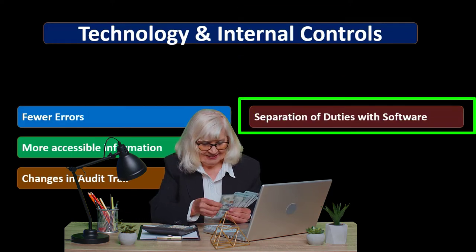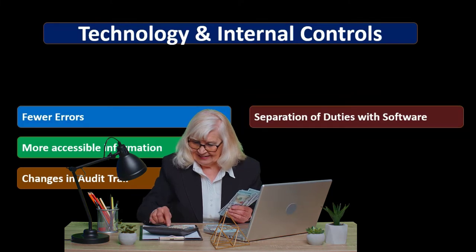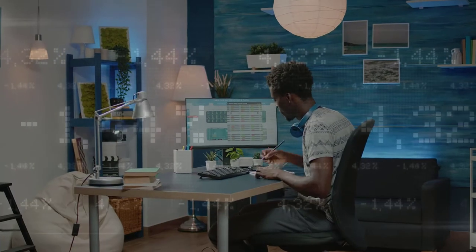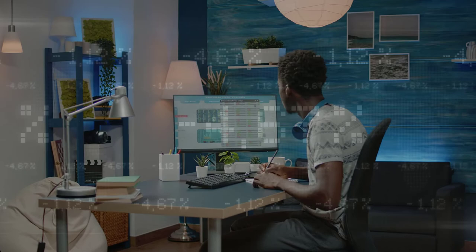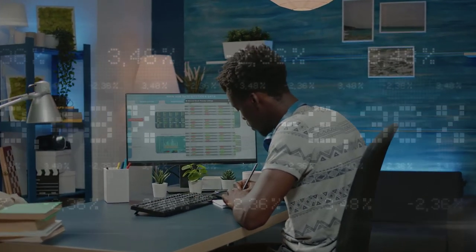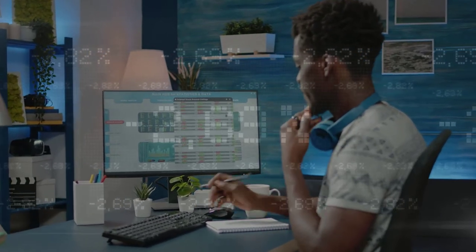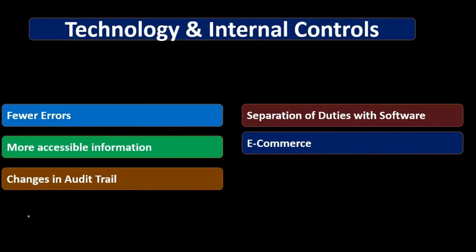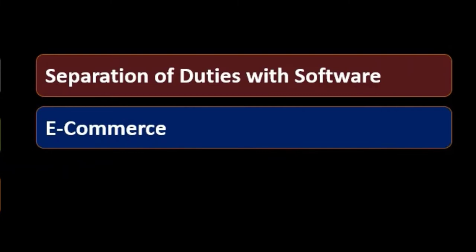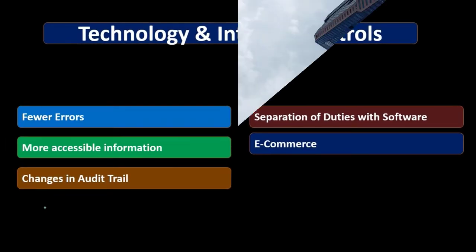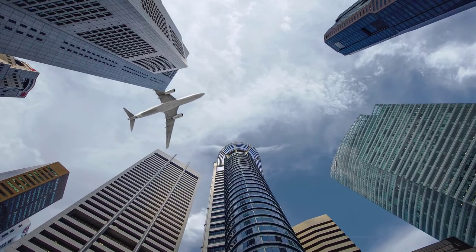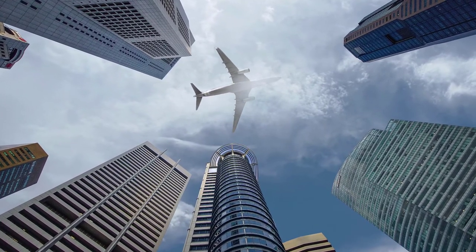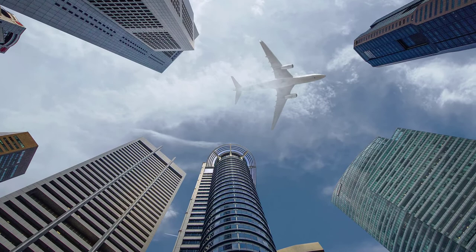Software can help us separate duties by providing access to different components within the software for different individuals — assigning responsibility and separating what one person can do versus another, which is one of our internal control objectives. E-commerce is also increasingly relevant, and the technology involved is a big component of why e-commerce is an industry that is picking up internal control fraud problems.